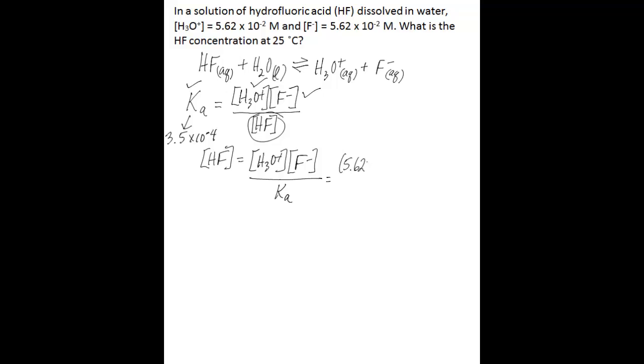5.62 times 10 to the negative 2 molar. 5.62 times 10 to the negative 2 molar. Again, those are the concentrations for hydronium and fluoride. We looked up our Ka, and we know that it's 3.5 times 10 to the negative 4. So when you do the math there, what you end up with is a hydrofluoric acid concentration of 9.02 molar.